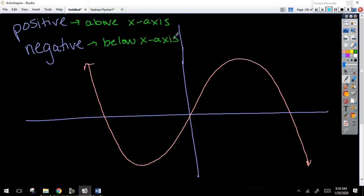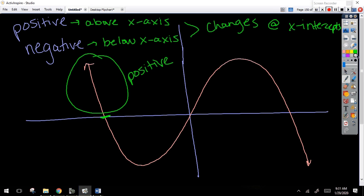So looking at this, where does it change from being positive to negative or negative to positive? That's exactly right. It changes at the x-intercepts. Do we all see that? This area here would be considered what? Positive. Because it's above. How about from this x-intercept to this one? Negative. Because it is below the x-axis.